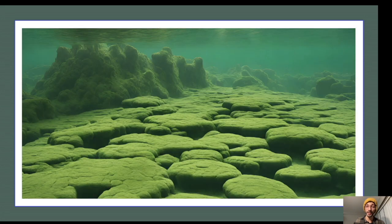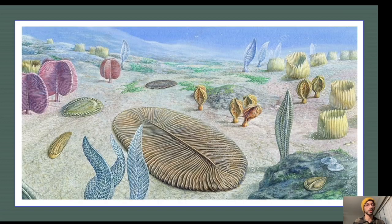During the Ediacaran period, photosynthetic algae bloomed in enormous microbial mats covering the sandy shallows all around the world. It was on these dense mats that new multicellular life emerged, grazing on these algal pastures like invertebrate cows. These strange creatures were out-competed by their descendants and disappeared entirely from the fossil record about 540 million years ago.